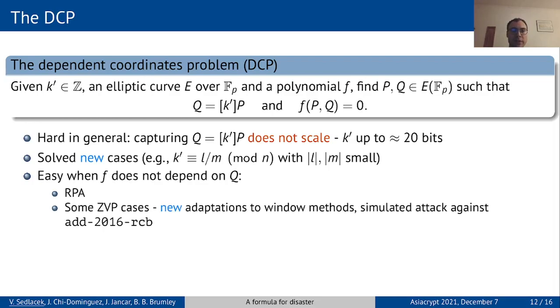More interestingly, we noticed this easy scenario can also occur for ZVP with some formulas. Moreover, we managed to use this to adapt ZVP to a new attack on window methods. We simulated such an attack on an implementation using the RCB addition formula, which is actually the only complete formula for prime order short Weierstrass curves.